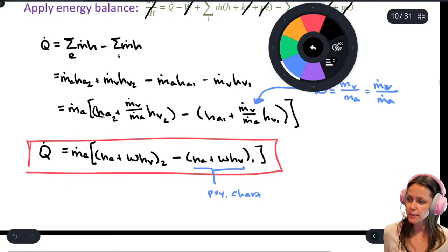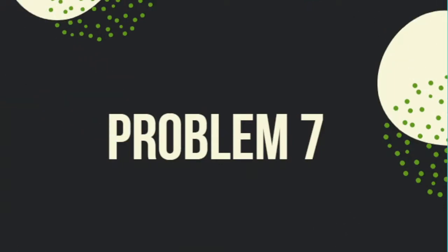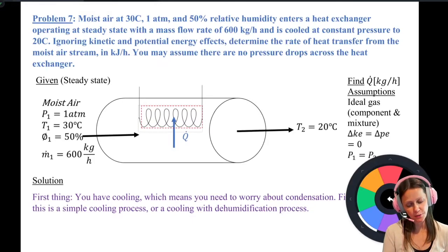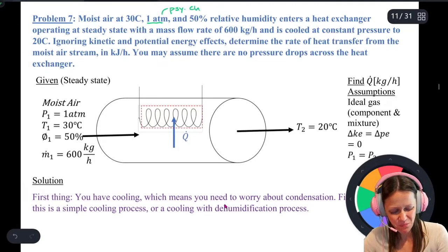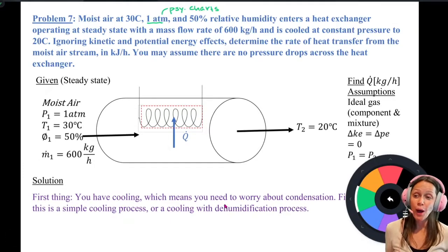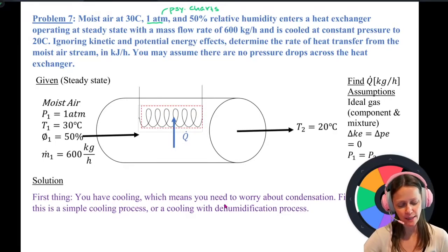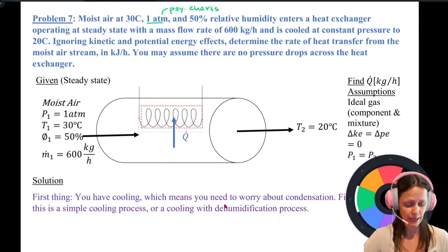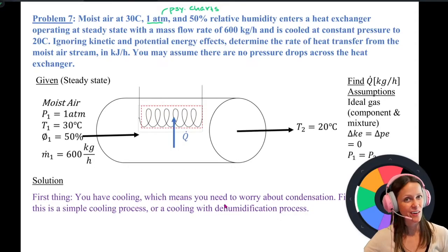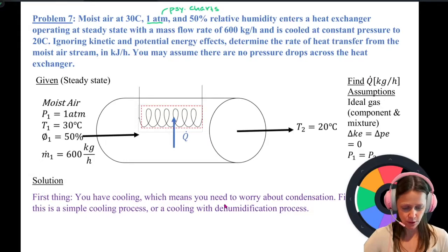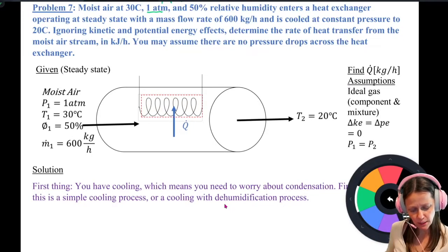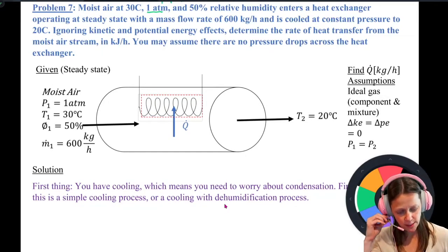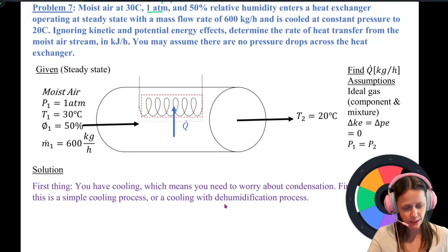Problem 7: Moist air at 30 degrees Celsius, 1 atm — that's a flag that I can use the psychometric charts. The problem states 50% relative humidity, a mass flow rate of the moist air of 600 kilograms per hour (that's m-dot_1), and the air exits at 20 degrees Celsius. We're told to ignore kinetic and potential energy effects, there's no pressure drop, and since we're going from 30 to 20 degrees, this is clearly a cooling process.